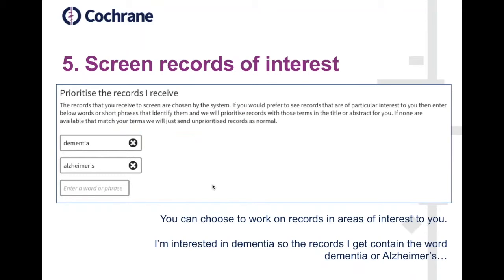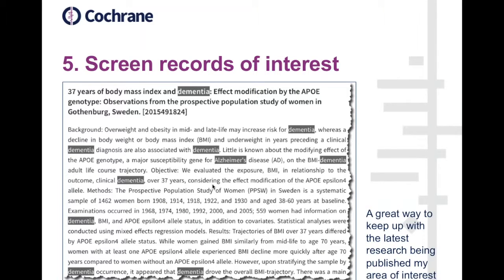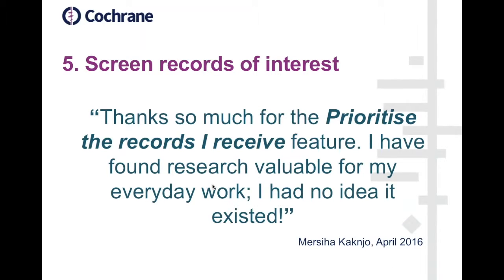Another new feature I'm really excited about — something many people have wanted since the Embase project — is the ability to screen records in areas of interest to you. I work for the Cochrane Dementia Group, so I'm interested in screening records likely to be about dementia. I've entered two key terms — dementia and Alzheimer's — and this will show me records containing either of those words. I've found it a great way to keep up with the latest research in my area, and a contributor emailed me just last week to say how much she's getting out of this feature, finding research valuable for her everyday work.